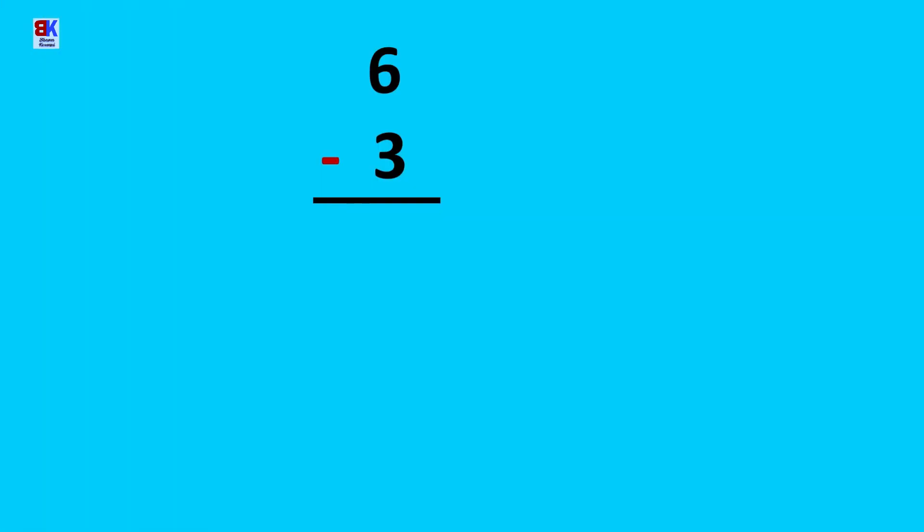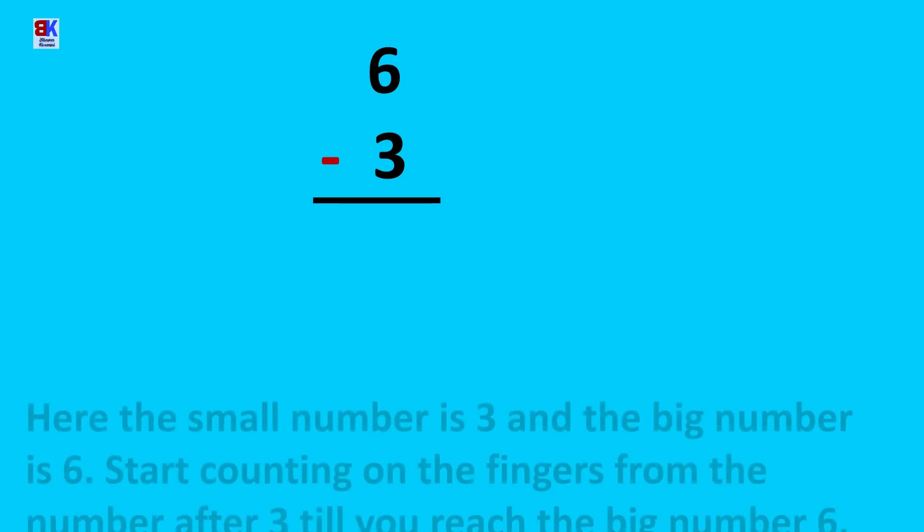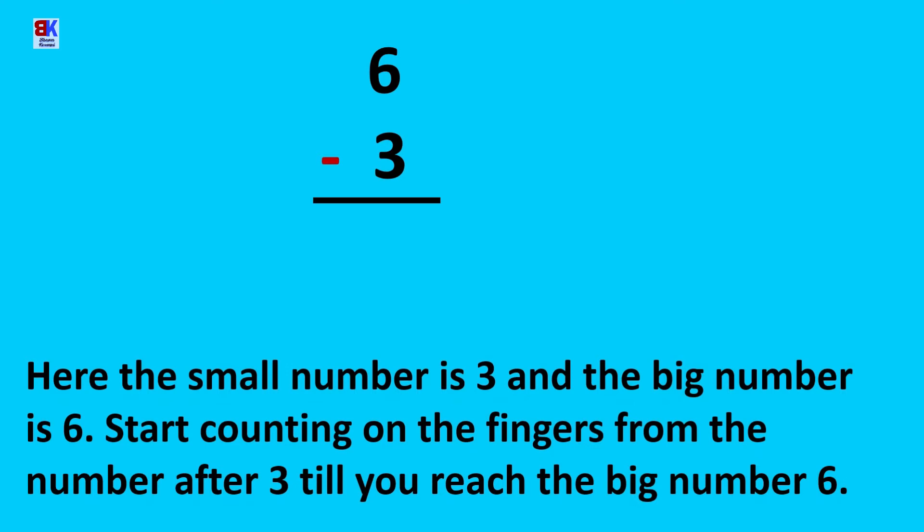Subtract 3 from 6, or 6 minus 3. Here the small number is 3 and the big number is 6. Start counting on the fingers from the number after 3, till you reach the big number 6. So we count: 4, 5, and 6. We required 3 fingers to reach the big number 6, so the answer of 6 minus 3 would be 3.